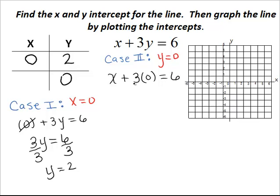We notice that 3 times 0 is simply 0. So then we're simply left with x equals 6. We've obtained our value for x, so then we have our x-intercept.